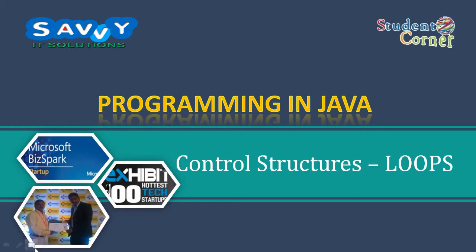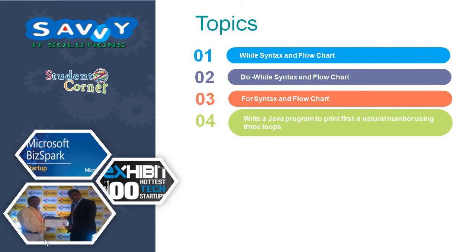In this video we are discussing about algorithms, while syntax and flowchart, do-while syntax and flowchart, for syntax and flowchart, and we will write a Java program to print first N natural numbers using three loops. I will explain using three loops.